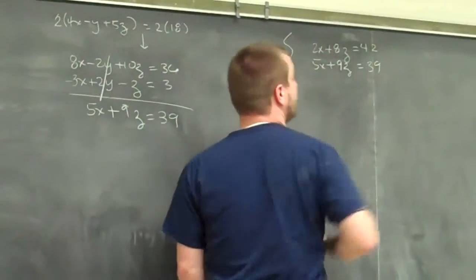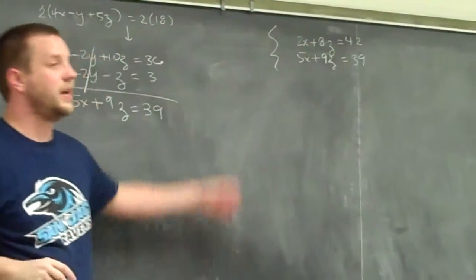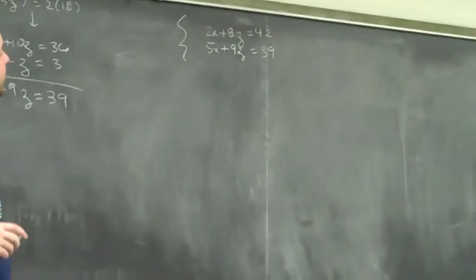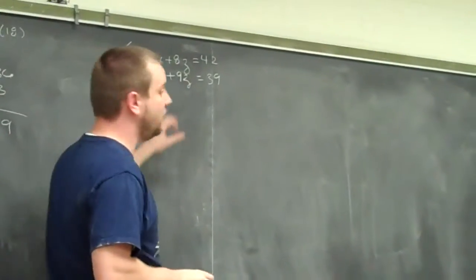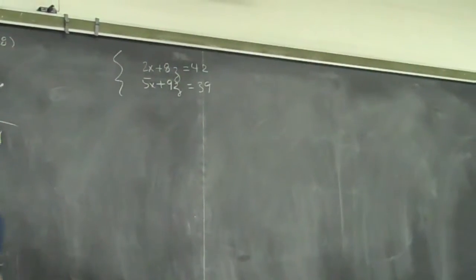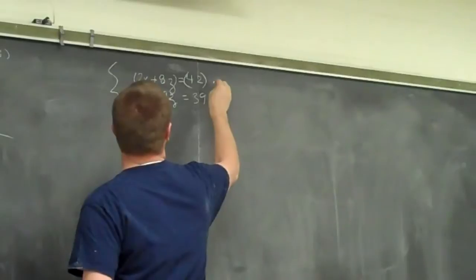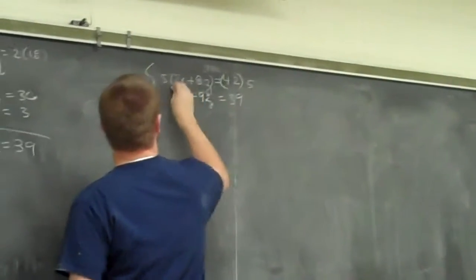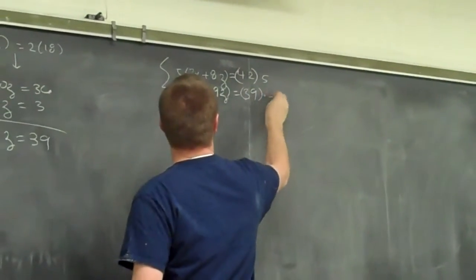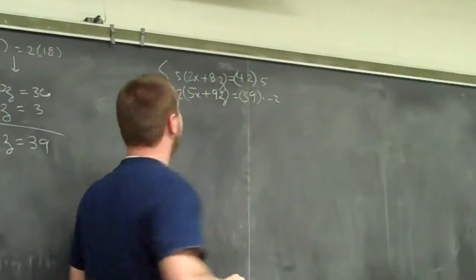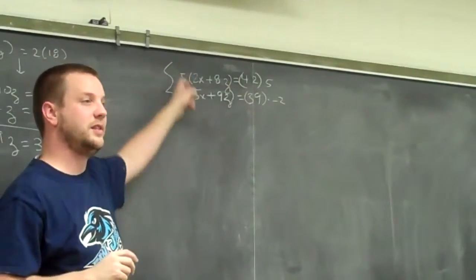And I can start solving that system, like I was the previous four examples. And once I get one of the numbers, I start working backwards. So I'm going to multiply this top one by 5, and this bottom one by negative 2, so that I can get positive 10x's and negative 10x's to cancel.